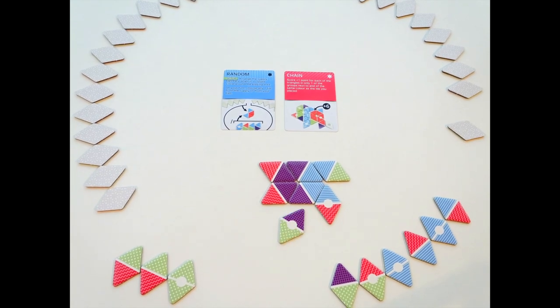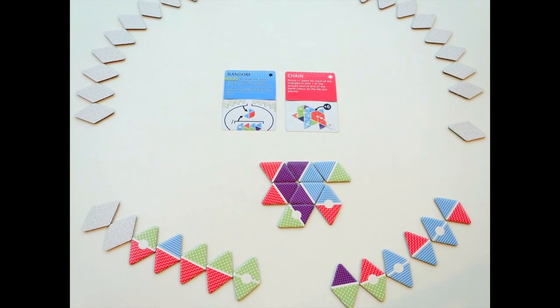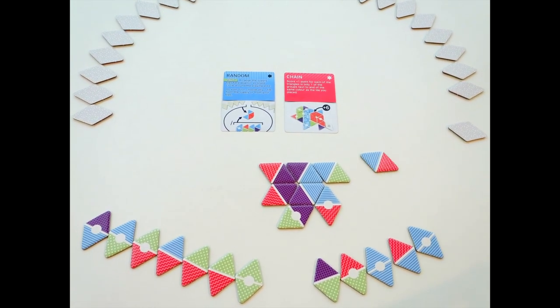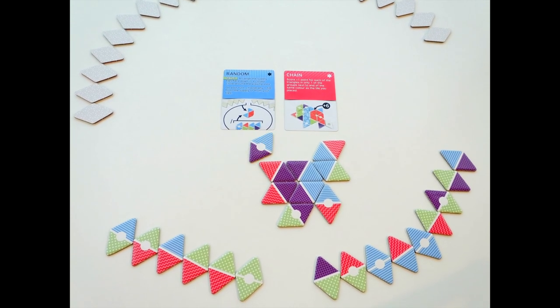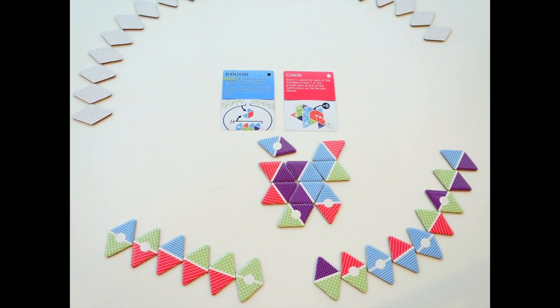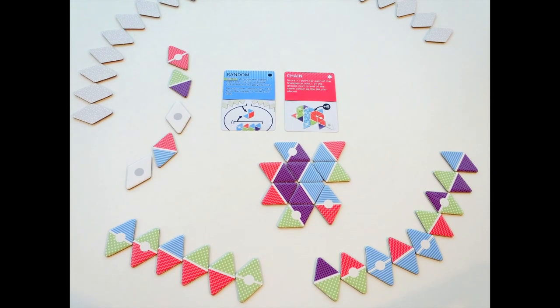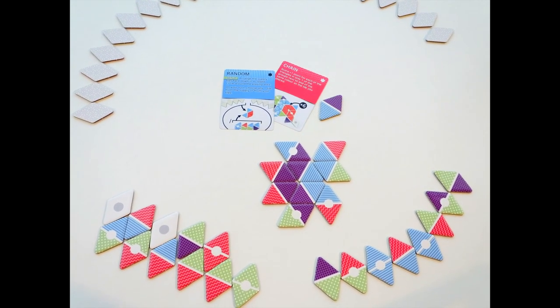The second player takes their turn and scores four points. The first player scores four points too. You will see how the players are trying to close the groups to prevent the other player from taking more points on their turn.